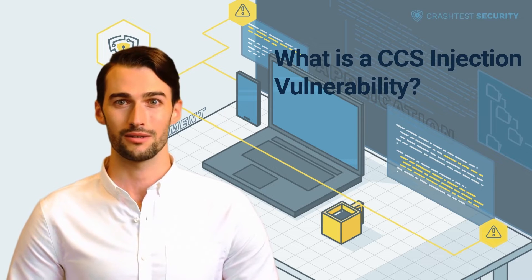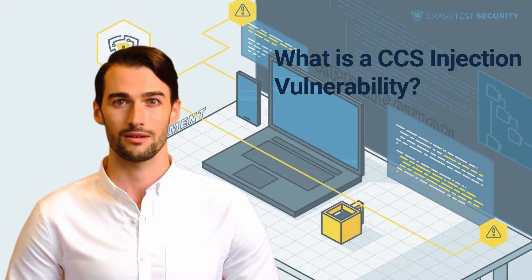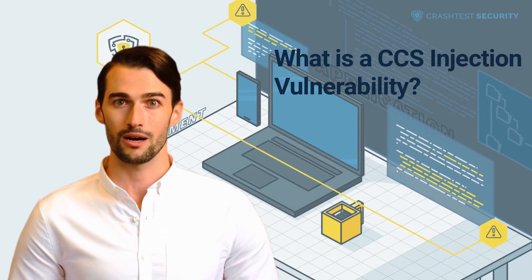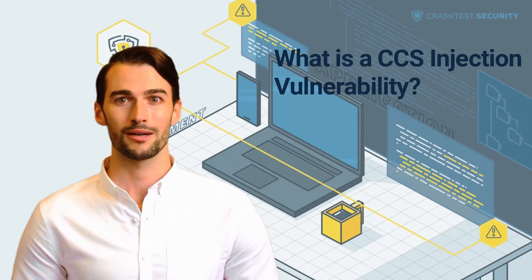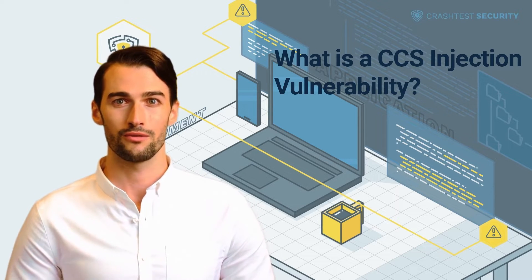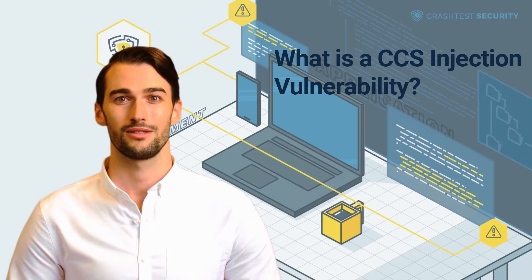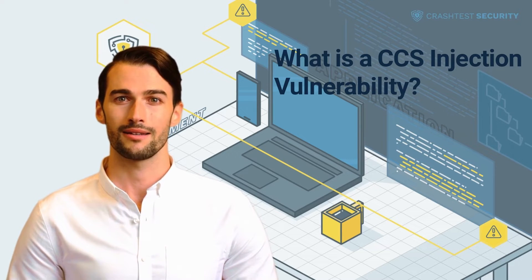A man-in-the-middle (MITM) attack allows an attacker to intercept, decrypt, and even modify the data exchanged between clients and servers. This would allow them to hijack a session, corrupt data, or obtain sensitive information. To pose a real threat, the vulnerability must be present both on the client and server sides. A CCS injection cannot be performed if only one party is vulnerable. While this makes a CCS injection less likely, it does not eliminate the threat and the best measure is to apply a patch.